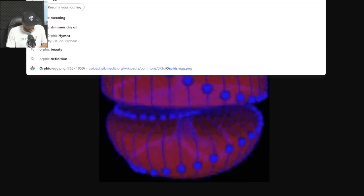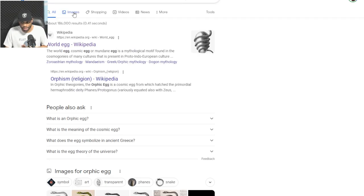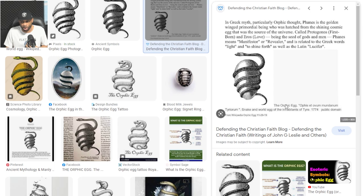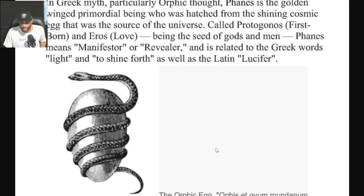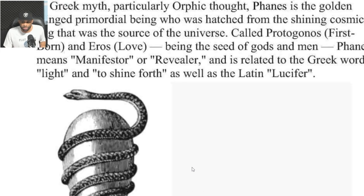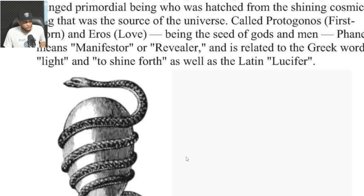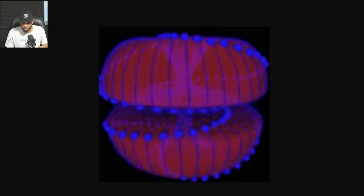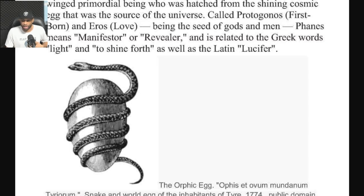Other cultures dealt with this science in their own ways. If you want to research this same science another way, look up the Orphic egg. In Greek myth — particularly Orphic thought — Phanes is the golden-winged primordial being hatched from the shining cosmic egg that was the source of the universe. This represents the source or force of the universe that I'm explaining, and we can see that with the Orphic egg.